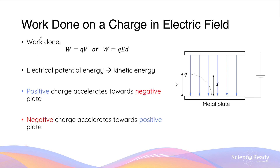Again, the work done is defined as the amount of energy given to the electron by the electric field. Specifically, when an electron is acted upon by forces in the electric field, its electrical potential energy is converted into kinetic energy. In other words, the speed of the electron will increase as its kinetic energy increases.